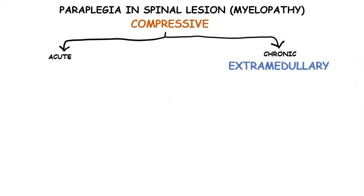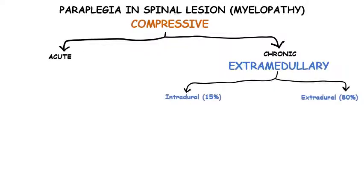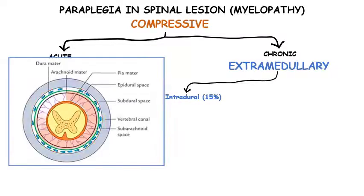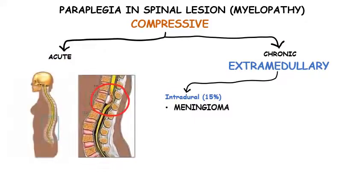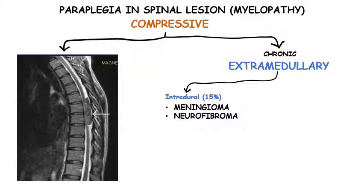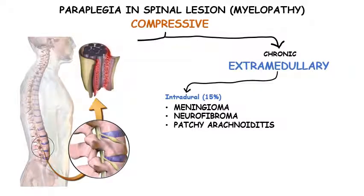Regarding extramedullary causes of chronic compressive myelopathy, they can be divided into intradural extramedullary and extradural extramedullary. Intradural extramedullary lesions are located outside the spinal cord but within the dural sheath and comprise about 15% of all chronic compressive myelopathy. These include meningioma, a typically slow-growing tumour arising from the meninges; neurofibroma, a benign nerve-sheath tumour — in 90% of cases found as standalone tumours, with the remainder associated with neurofibromatosis type 1, an autosomal dominant inherited disease; and patchy arachnoiditis arising from diseases like tuberculosis, syphilis, sarcoidosis, and spinal arteriovenous malformations.